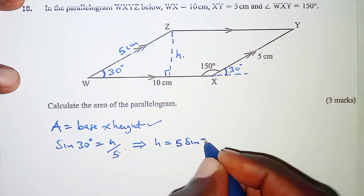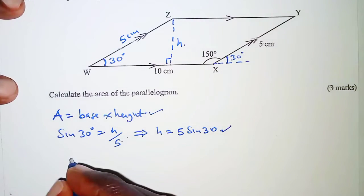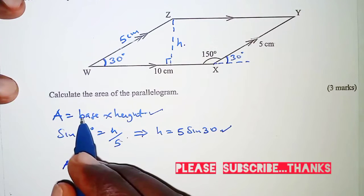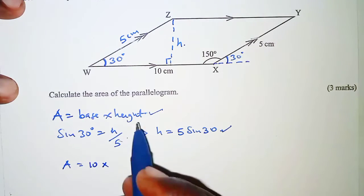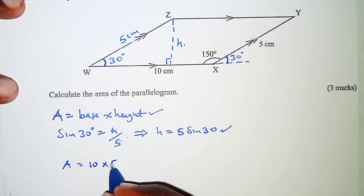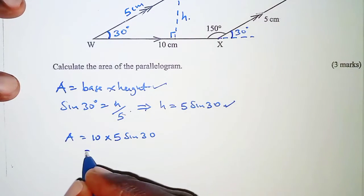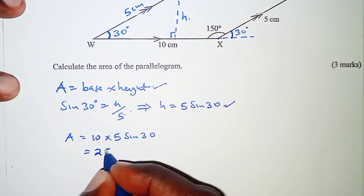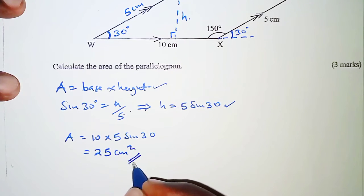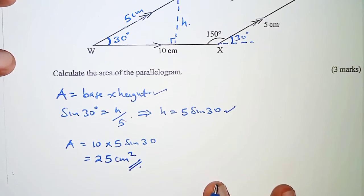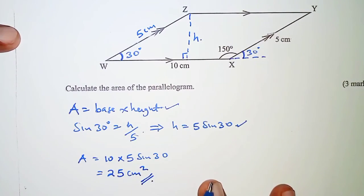Using this in the formula, the area is base times height: 10 × 5 sine 30°. When we multiply this out we get 25 square centimeters. That is it for this video — thank you for watching, and hope to see you in the next video.